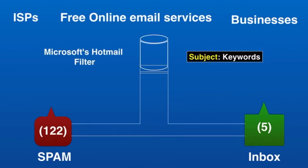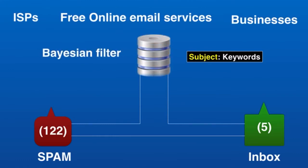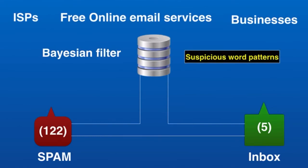This method was not effective and often ignored legitimate messages while letting actual spam through. A more advanced program — the Bayesian filter — was introduced. It identifies spam messages by recognizing suspicious word patterns, learning the user's preferences based on emails marked as spam, then creating rules and applying them to future emails that target the user's inbox.